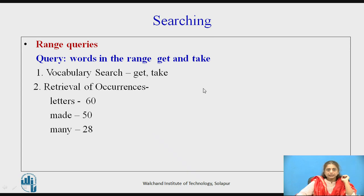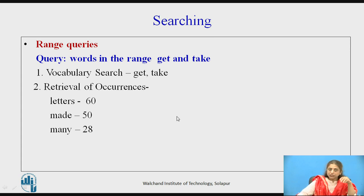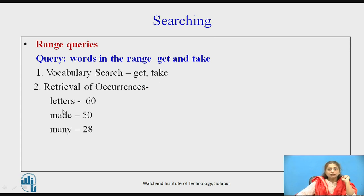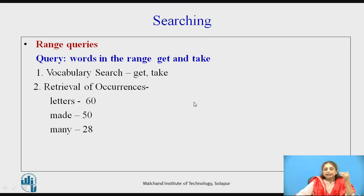For a range query — for example, finding all words between 'get' and 'take' — the search finds 'get', then finds 'take', and retrieves all keywords in between. Because the vocabulary is stored alphabetically, all keywords in that range are retrieved. In our example, 'letters', 'made', and 'many' would be retrieved with occurrences 60, 50, and 20. For a range query, both boundary keywords are searched and all words in between are taken with their occurrences.